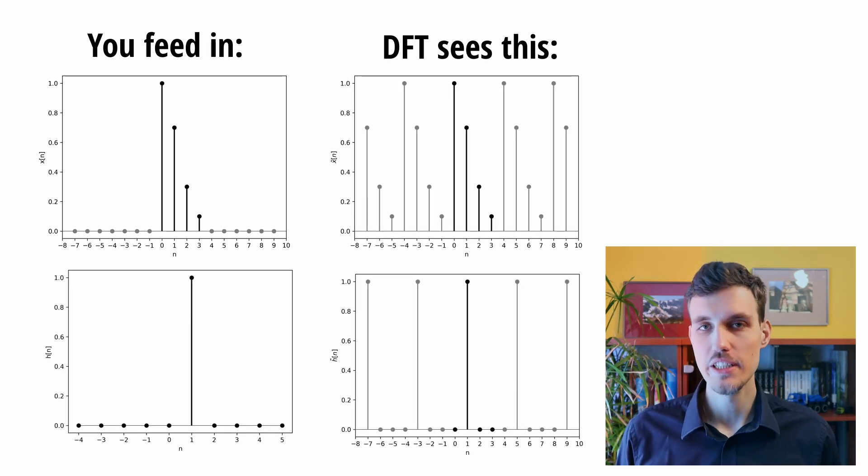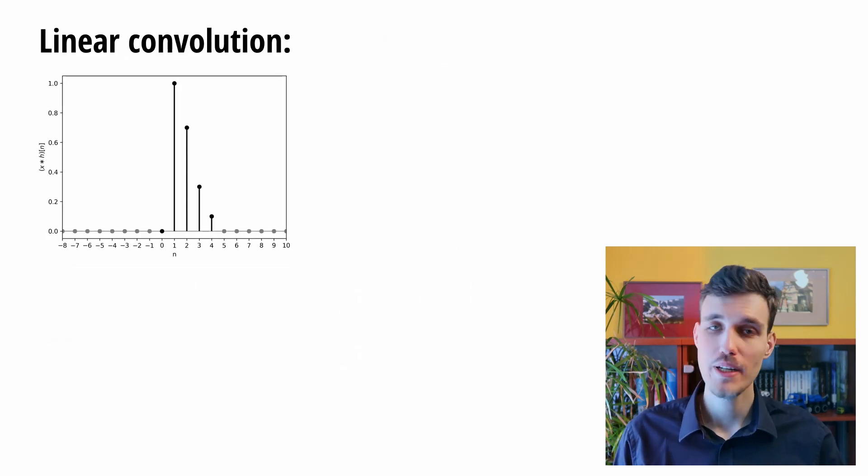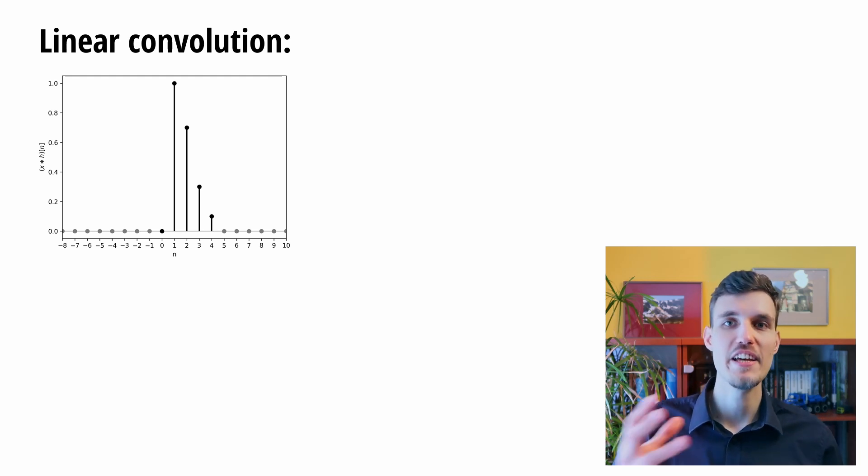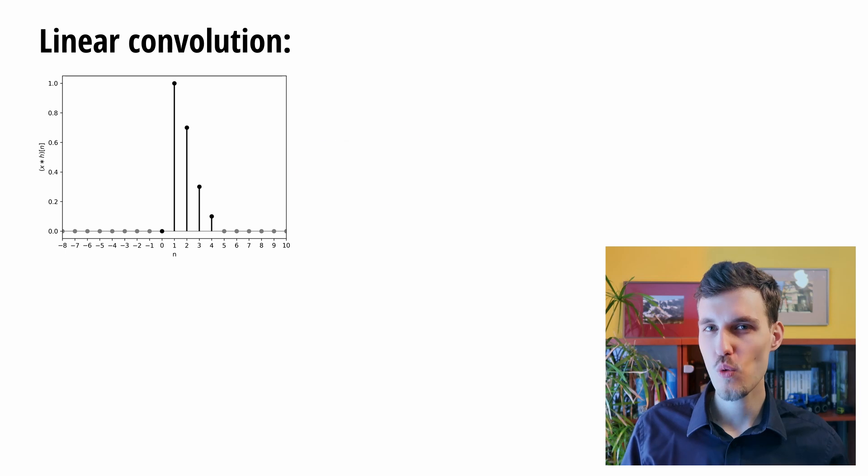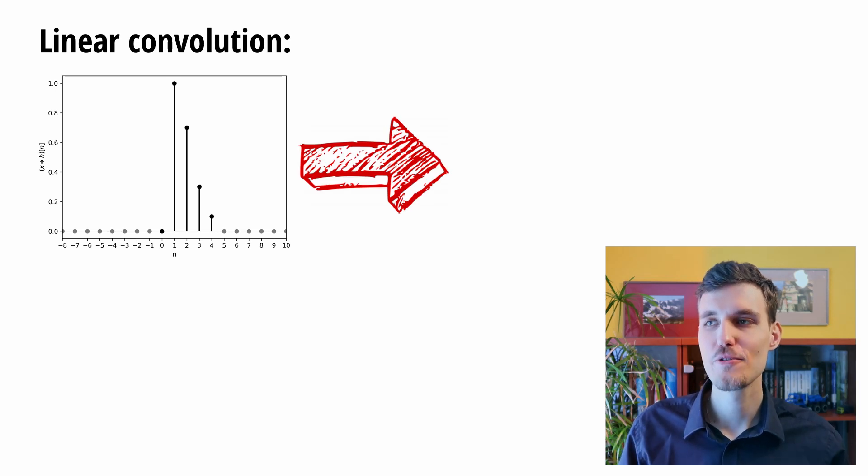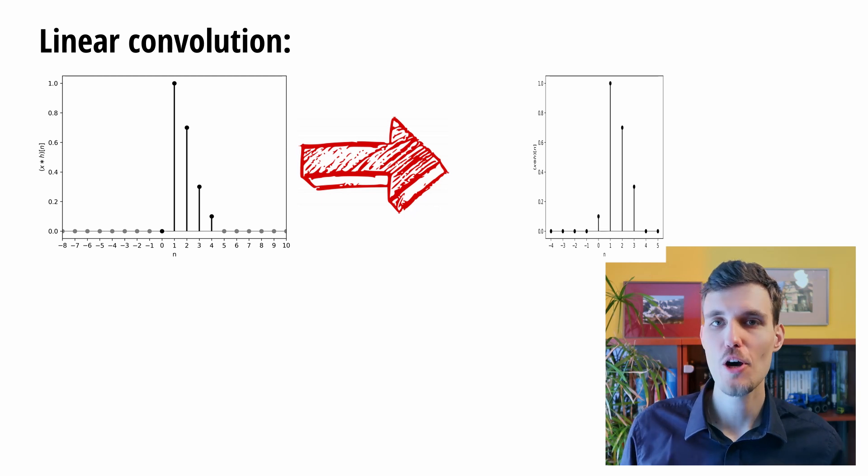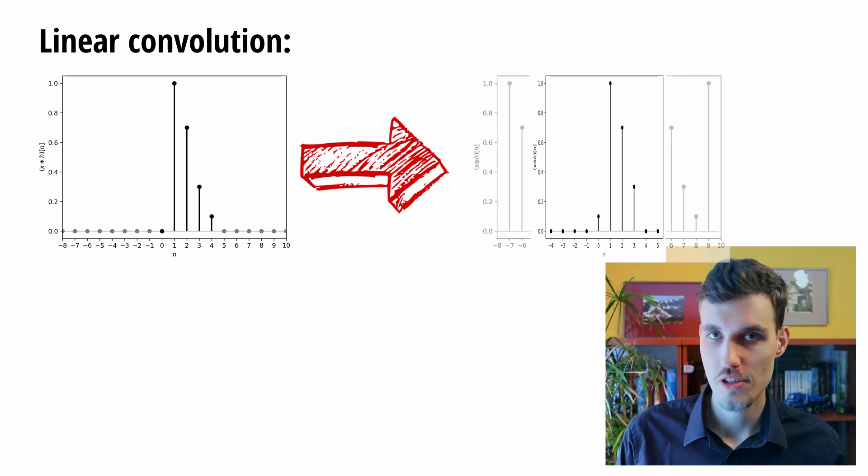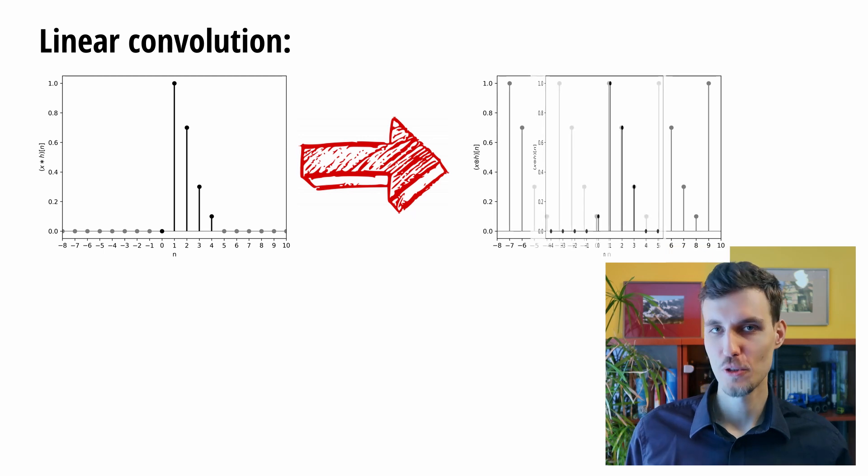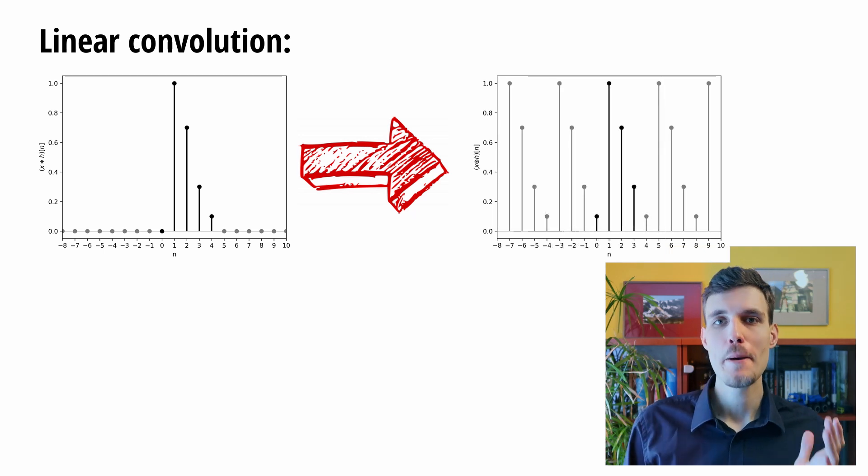The result of the linear convolution of x and h is of length 4 plus 2 minus 1 which is 5. But in our operation of calculating the DFTs multiplying and then the inverse DFT we squashed these five elements into four element vector effectively obtaining aliasing but not in the frequency domain but in the time domain.